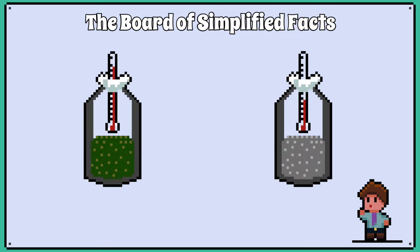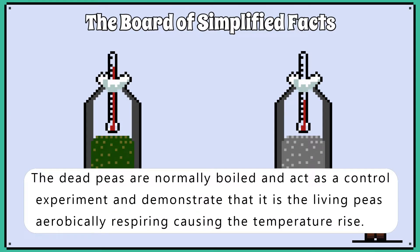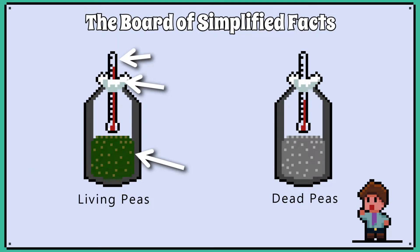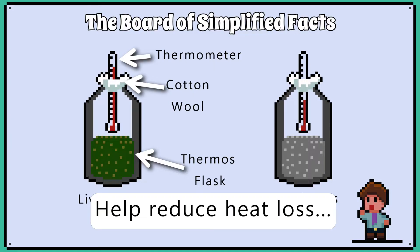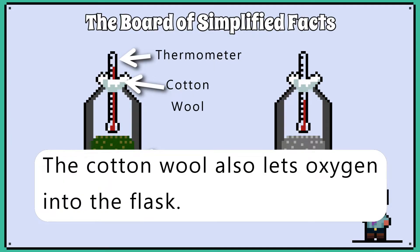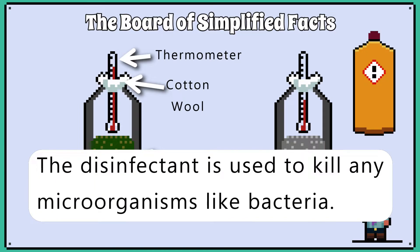Back to our germinating peas experiment. We have some living peas and some dead peas. The dead peas are normally boiled and act as a control experiment, demonstrating that it is the living peas aerobically respiring causing the temperature rise. To record the temperature, we have a thermometer. The Erlenmeyer flask and cotton wool are used to help reduce heat loss. The cotton wool also lets oxygen into the flask.